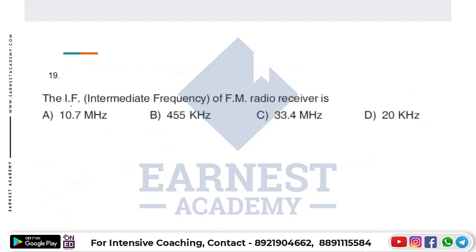The intermediate frequency of an FM radio receiver is 10.7 MHz. This is the standard IF frequency value for FM.